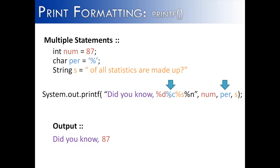Next, we would go to %c, which is going to look for a character value, and our character value is %. So it would say, did you know, space, 87, and then the % symbol. And then our last placeholder is %s. And what that's going to look for is a string, and it finds string s. String s says, space of all statistics are made up. So when we finish, it would give us the string, did you know, 87% of all statistics are made up.